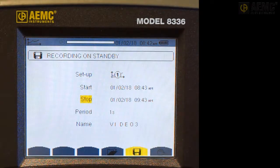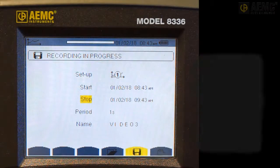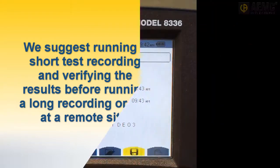When the recording is active, the message Recording in Progress appears on the screen. As a good practice, before you run a long recording, or one at a remote site, we recommend running a short test recording and viewing it to ensure it contains meaningful data. This helps identify issues, such as current probes connected in reverse directions, or incorrect current and voltage phase connections.